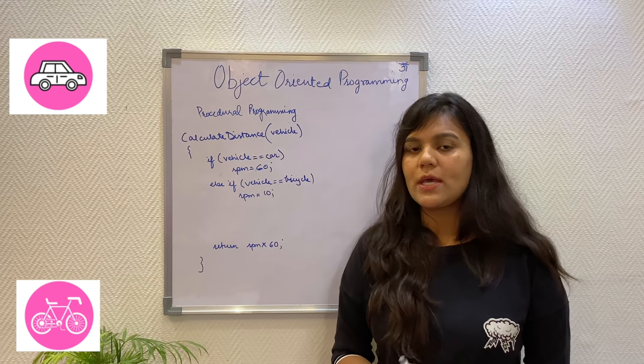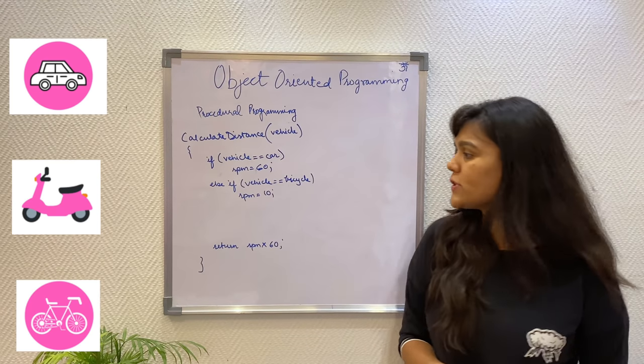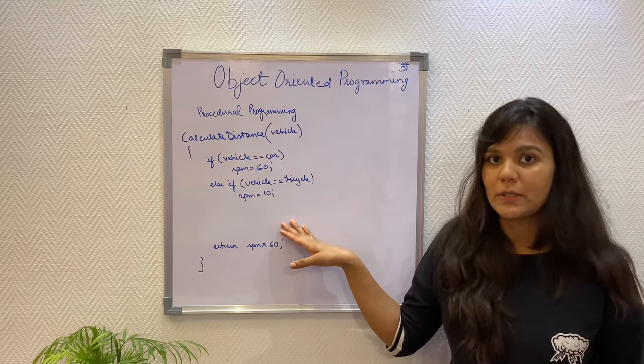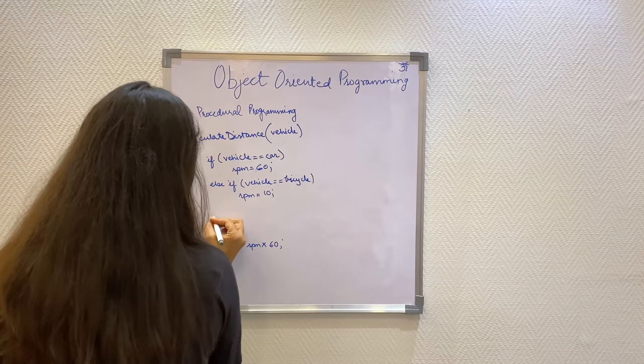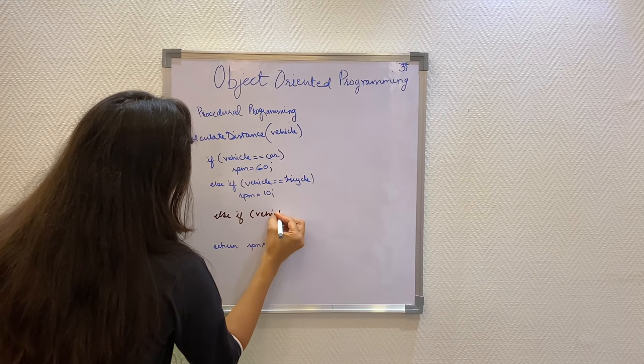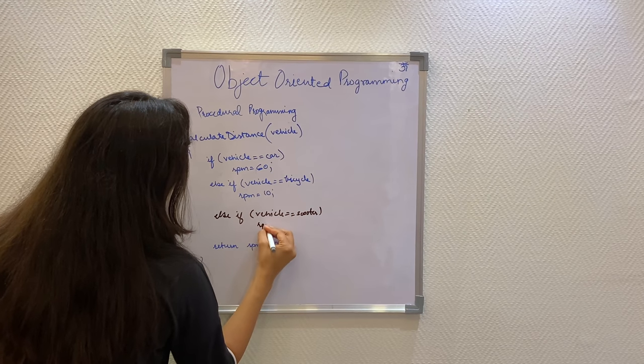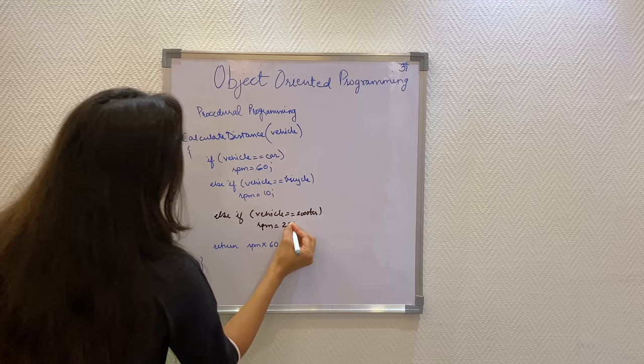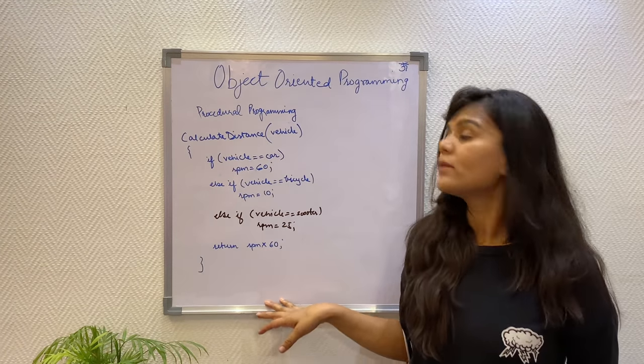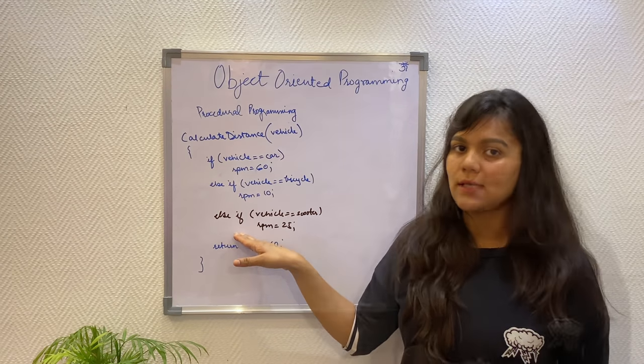Let's say the problem has changed and a new vehicle has been introduced, which is a scooter. For the scooter, I will have to change my existing function and introduce an if condition. The already tested code will now get modified and a new condition will be added which will have to be retested again.